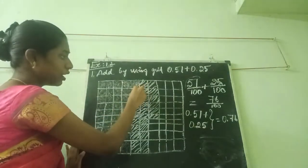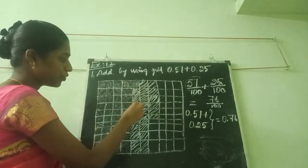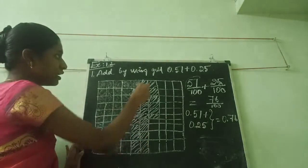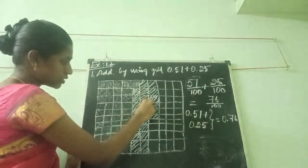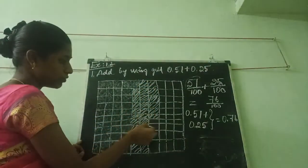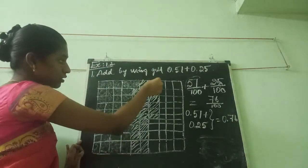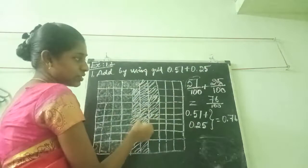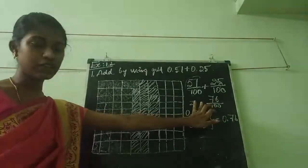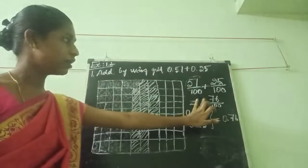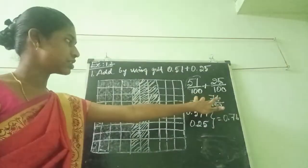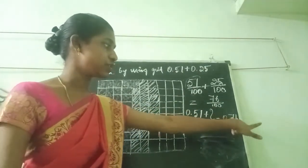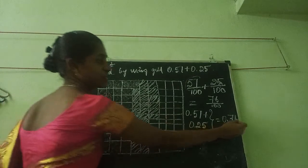Then continuing from 51, we count 52, 53, 54, 55 ... all the way up to 76. We have 76 total shaded boxes. That means I am putting in decimal fraction method: 76 divided by 100. Writing in decimal point: 0.76. This is the answer for this first sum. All of you understand?